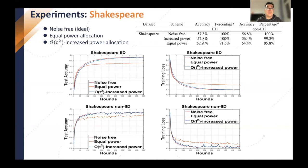The increased power allocation scheme achieves 56.4% test accuracy, which is about 2% higher than the equal power allocation scheme. From all experiment results, we can see that the increased power allocation scheme achieves higher test accuracy and lower training loss than the equal power allocation scheme.